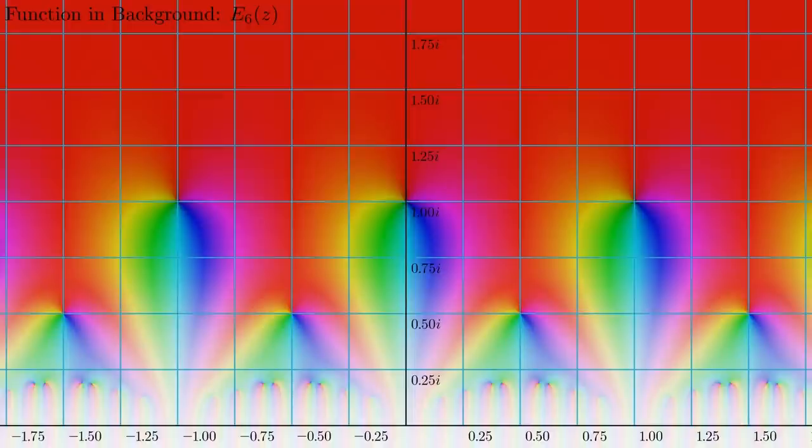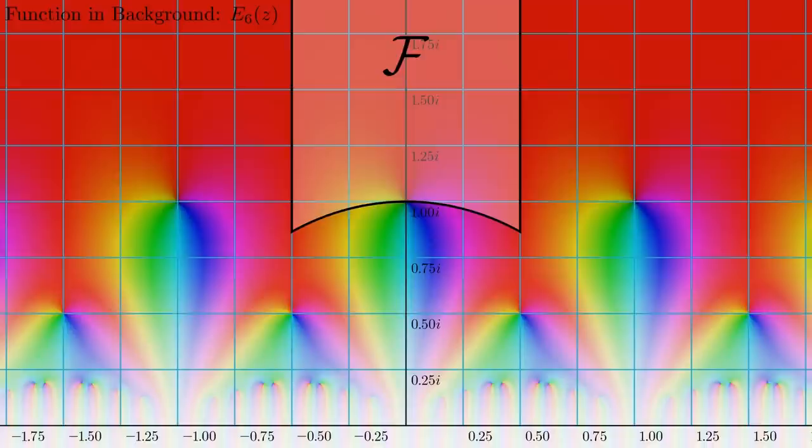Now, one consequence of these symmetries is that, for a modular form, we essentially only need to know its values in the so-called fundamental domain, located here on the complex plane. Remember, we initially saw that modular forms act on lattices, so every point in the fundamental domain corresponds to a lattice. For example, our lattice from earlier corresponds to this point here, where tau was.